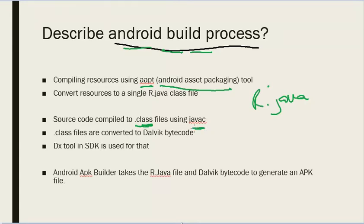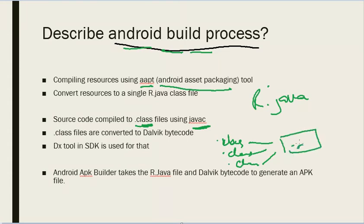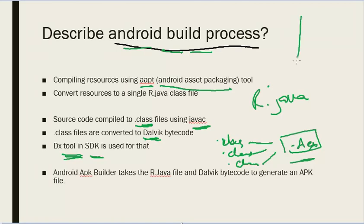Then you have the Java files which are converted into .class files by the Java compiler (javac). After that, these different .class files are all combined into one .dex file using the DX tool in the Android SDK. This is called Dalvik bytecode.